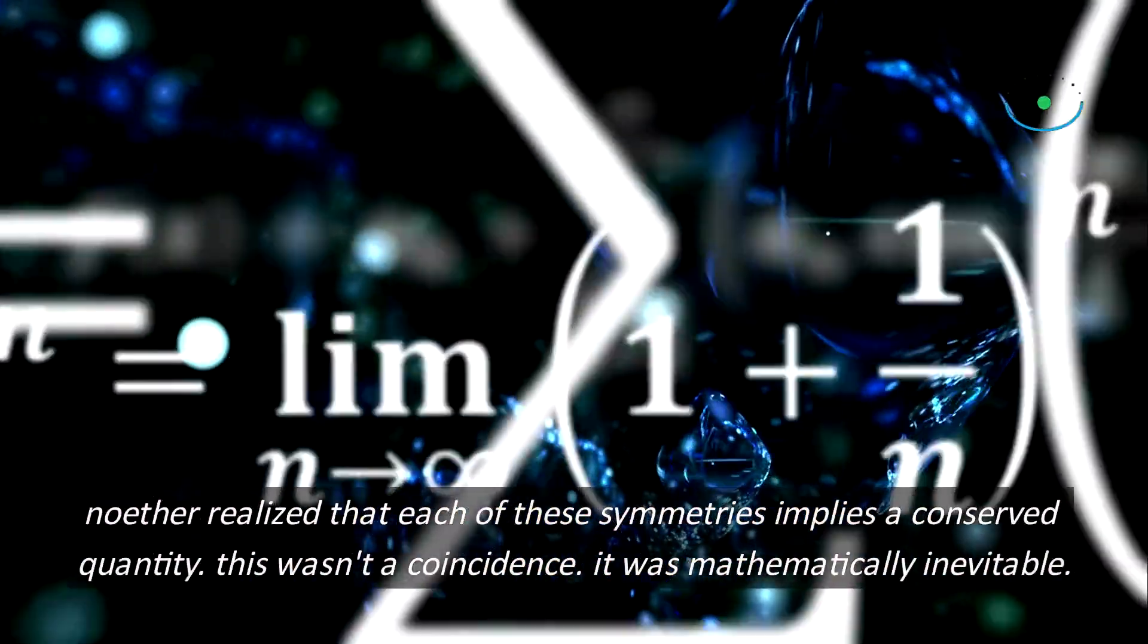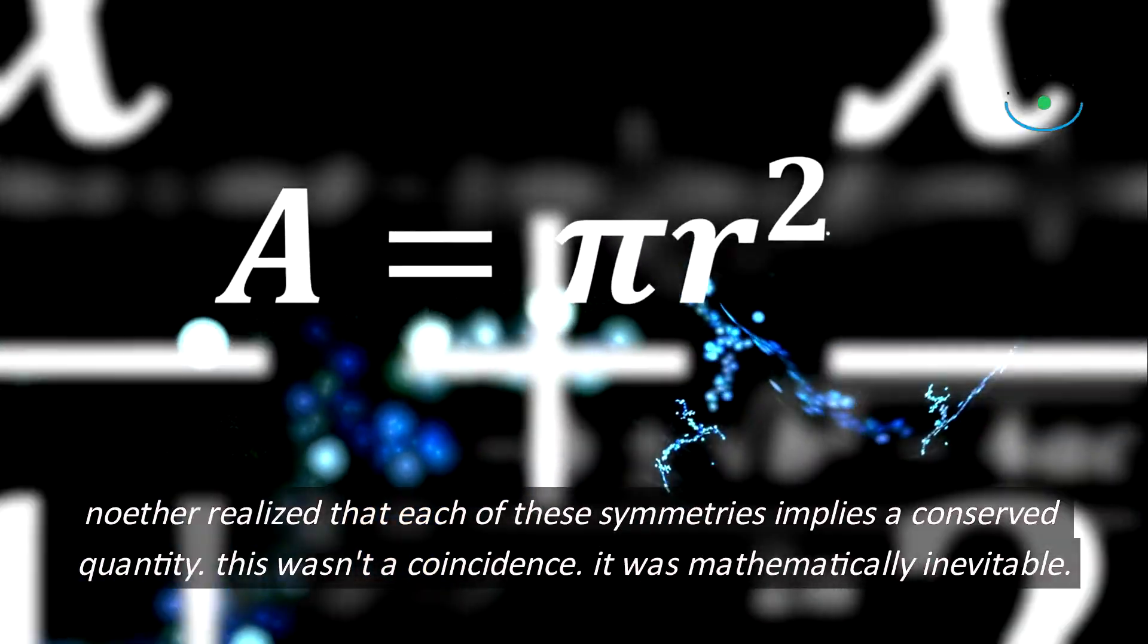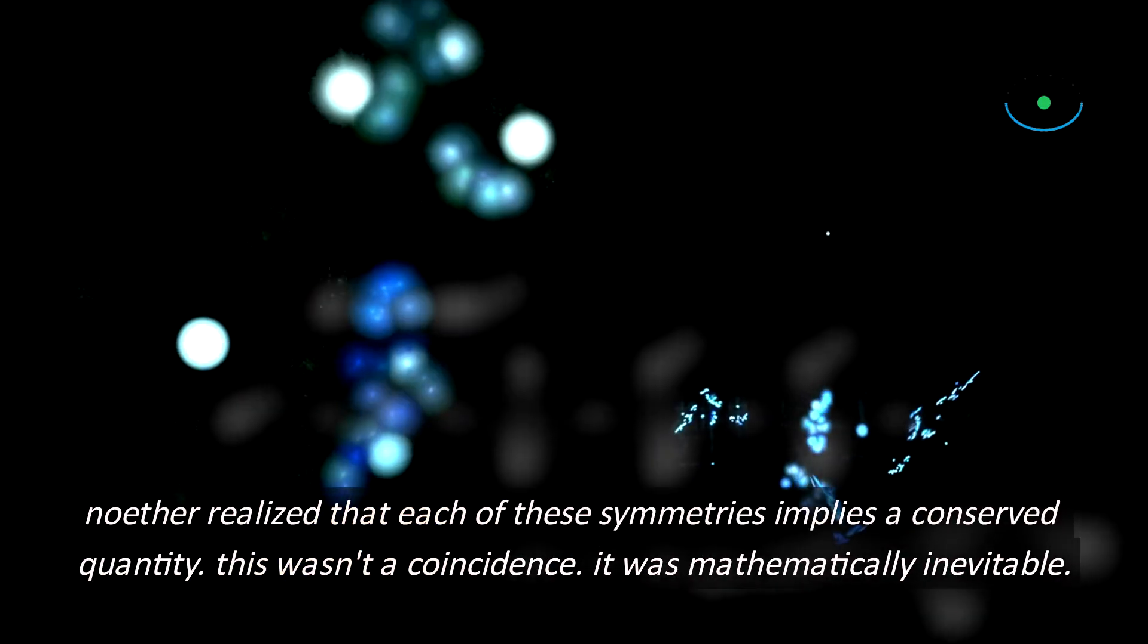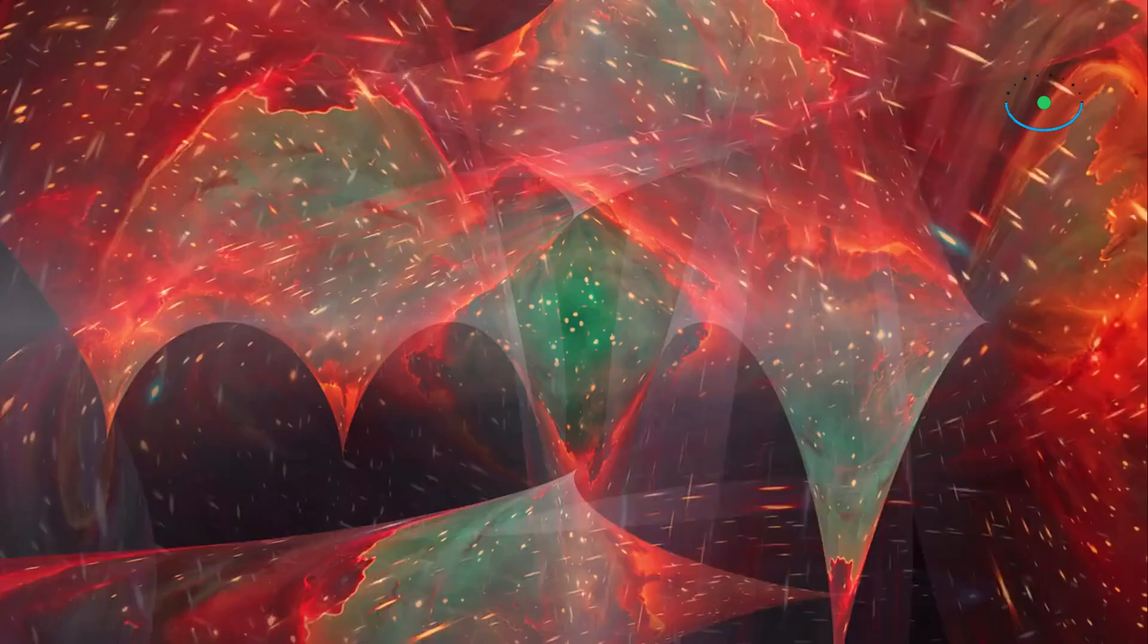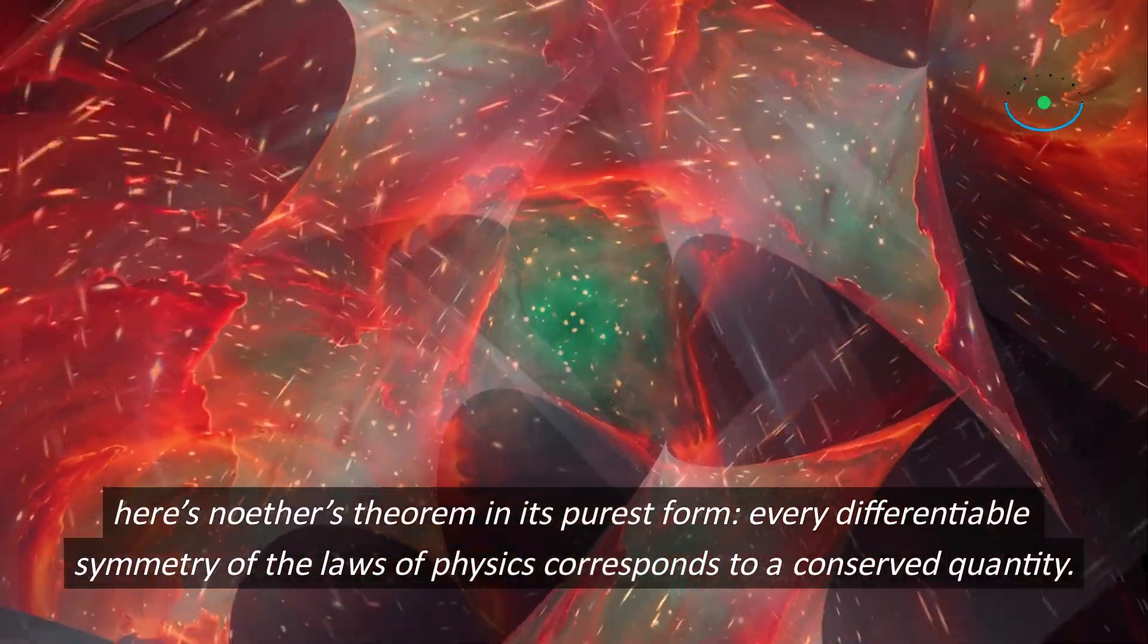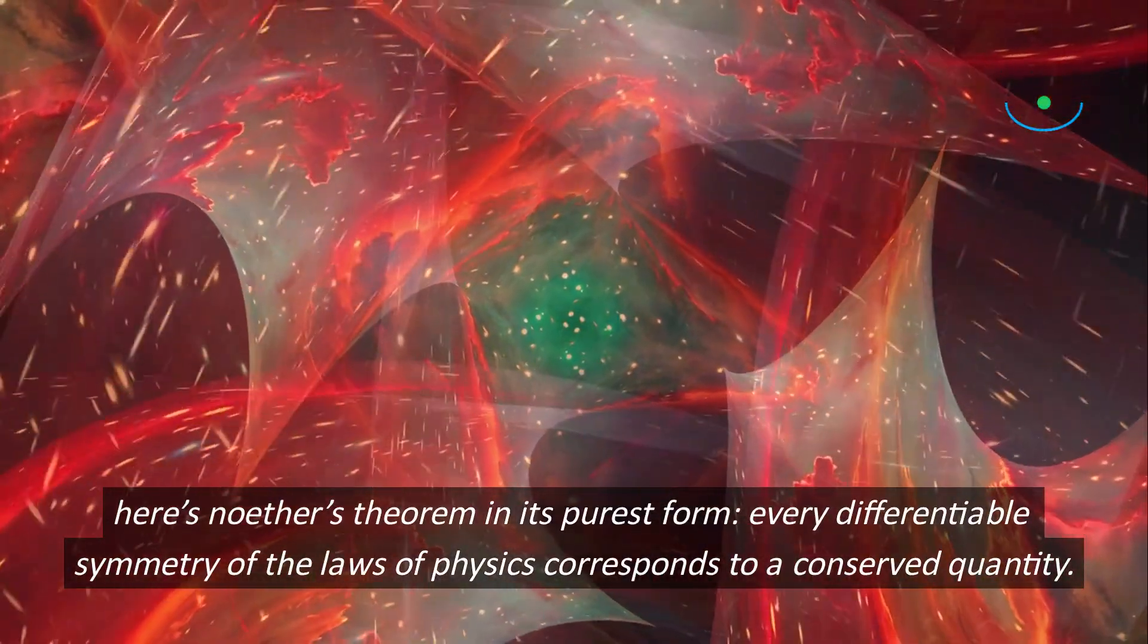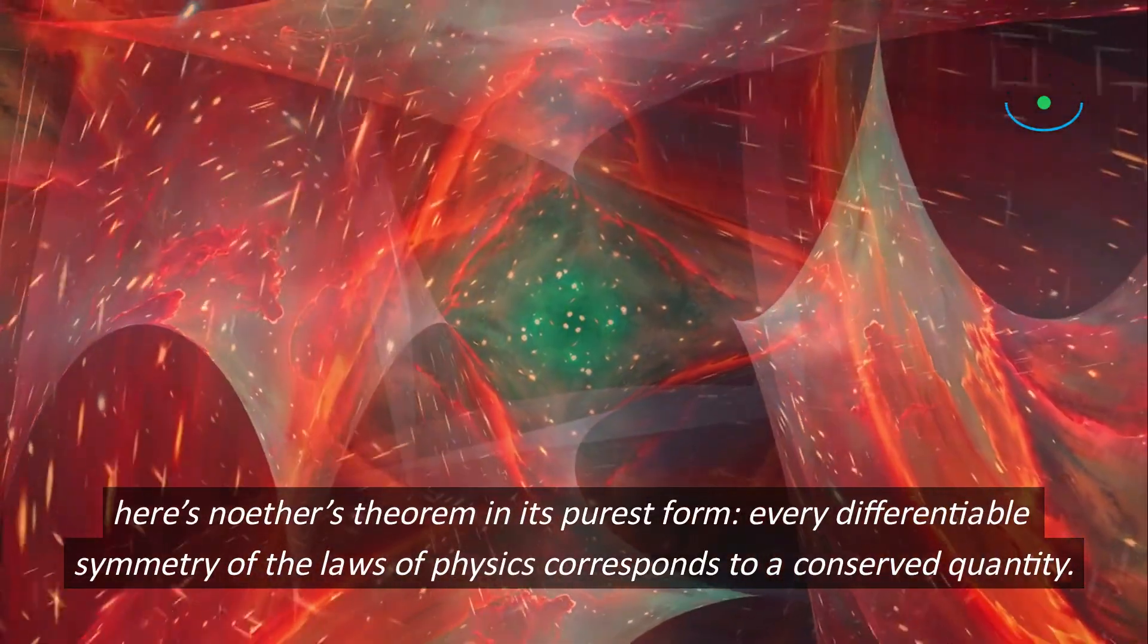Noether realized that each of these symmetries implies a conserved quantity. This wasn't a coincidence. It was mathematically inevitable. Here's Noether's theorem in its purest form: Every differentiable symmetry of the laws of physics corresponds to a conserved quantity.